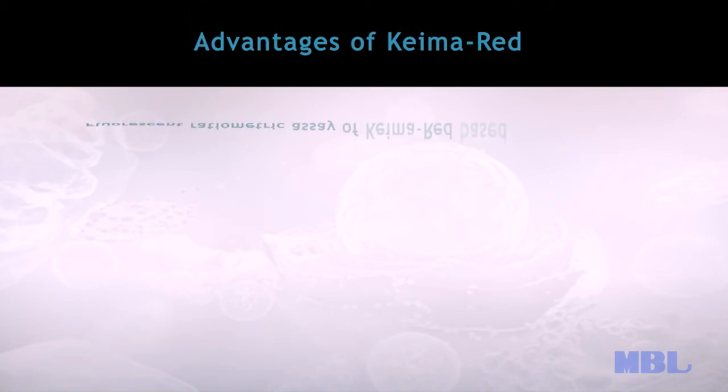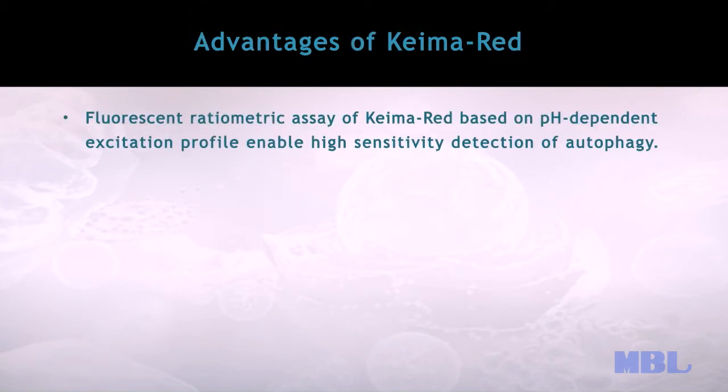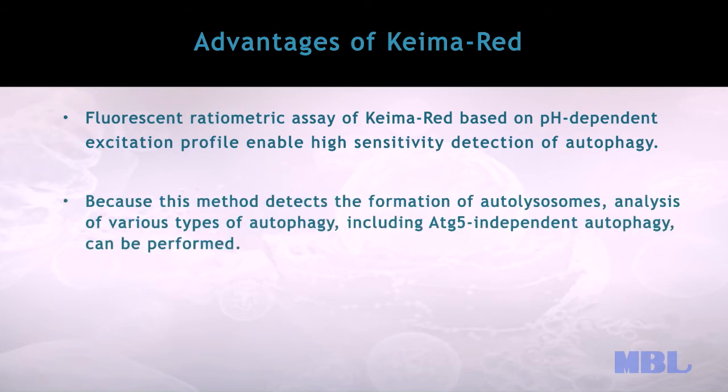Advantages of chemo-red: Fluorescent ratiometric assay of chemo-red based on pH-dependent excitation profile enables high-sensitivity detection of autophagy. Because this method detects the formation of autolysosomes, analysis of various types of autophagy, including ATG5-independent autophagy, can be performed.